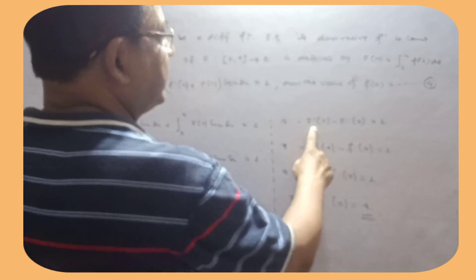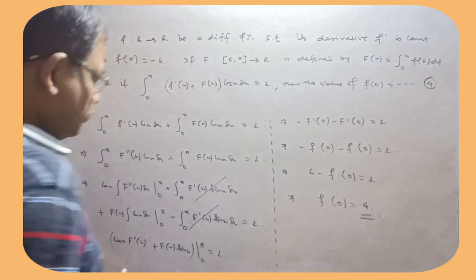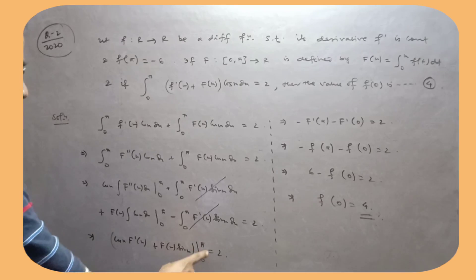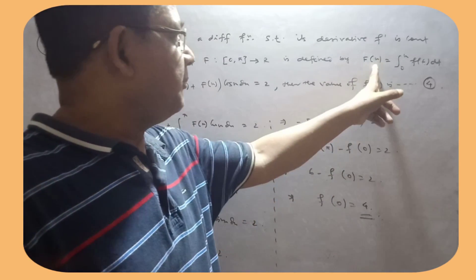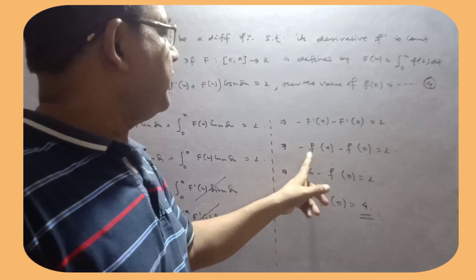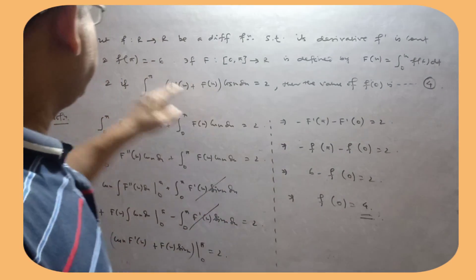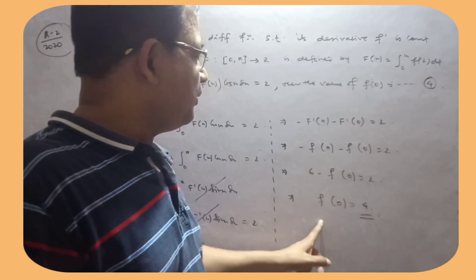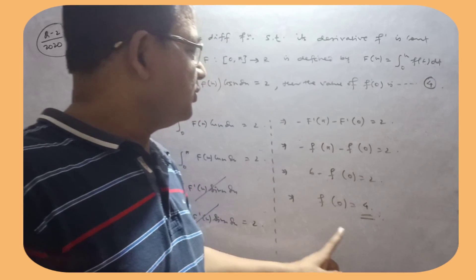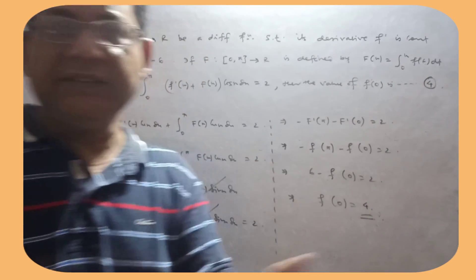A value ko put kar diya. So f dash pi minus f dash 0 equal to 2 hai. Kyunki sin pi to 0 hai, cos pi minus 1 hai. Isko dimaag me rakhna hai. Abhi f dash x kya hoga? F x hai. So minus f of pi minus f of 0 equal to 2 hai. Yeh pe f of pi ka value minus 6 hai. 6 minus f of 0, f of 0 ka value find karna tha. So that one is 4 hai.